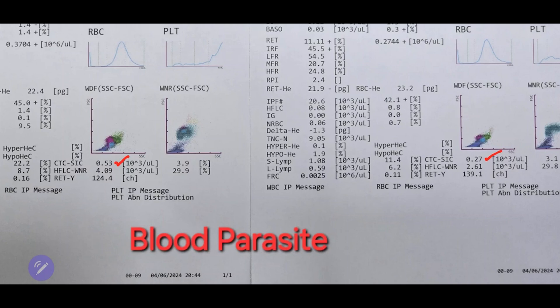Moving on to HFLC. It was initially at 4.09, matching our usual HFLC observations. However, after treatment, it dropped to 2.61. My acceptable value is only 0.10.